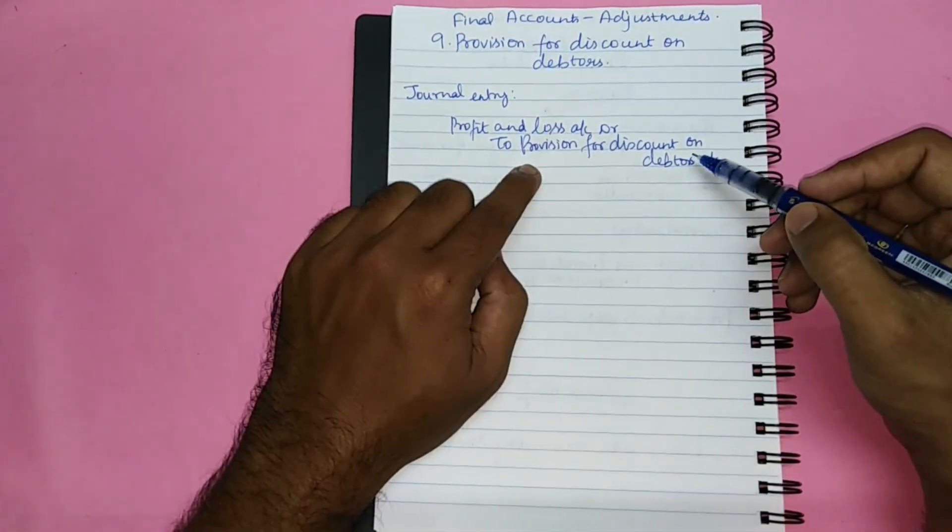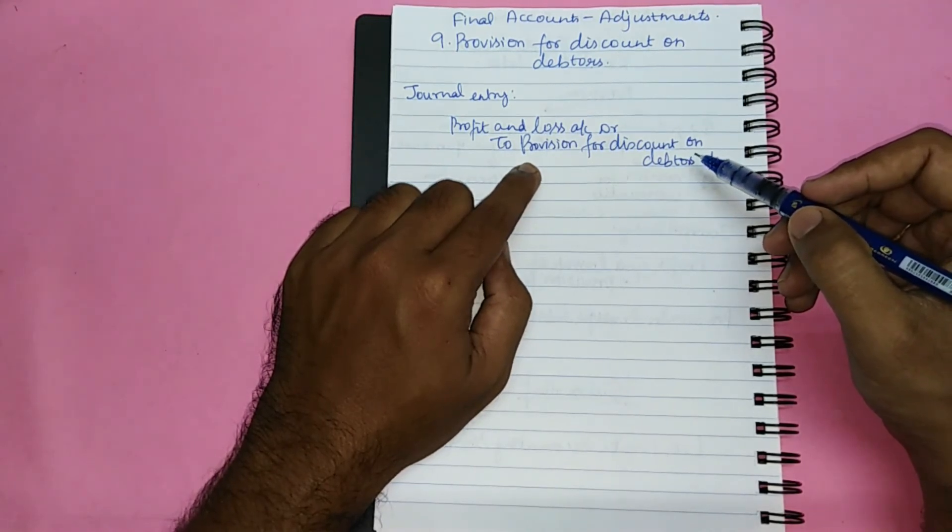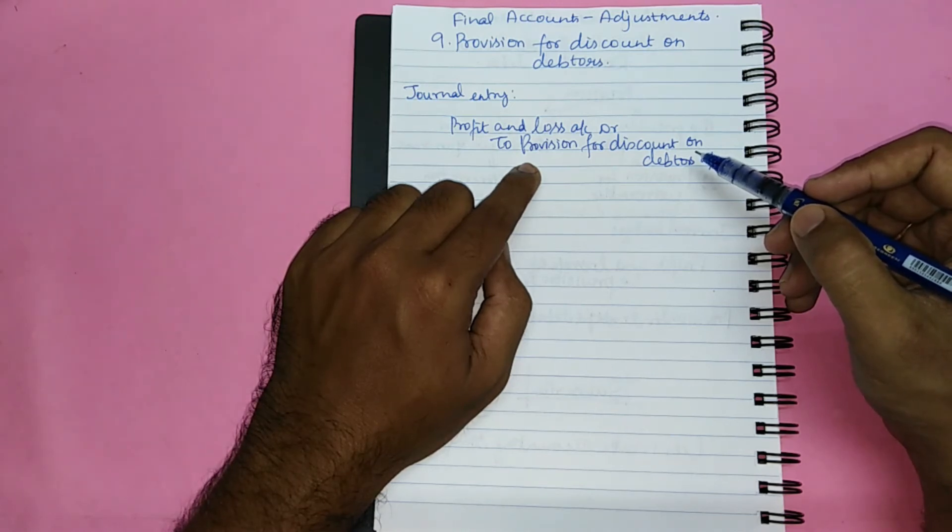This provision for discount on debtors will be created only on good debtors, which is the case arrived at after deducting further bad debts and provision for doubtful debts.